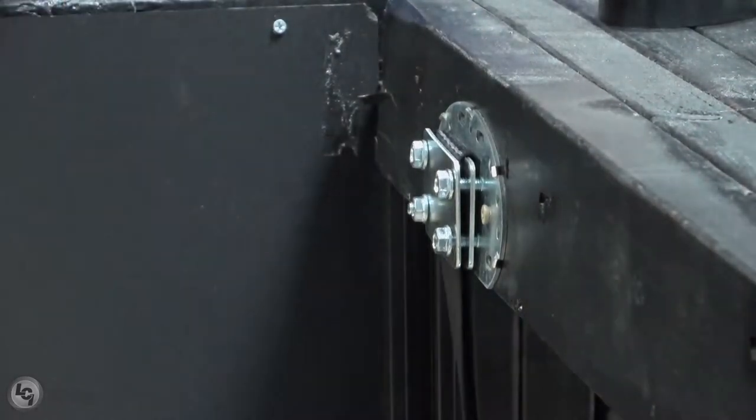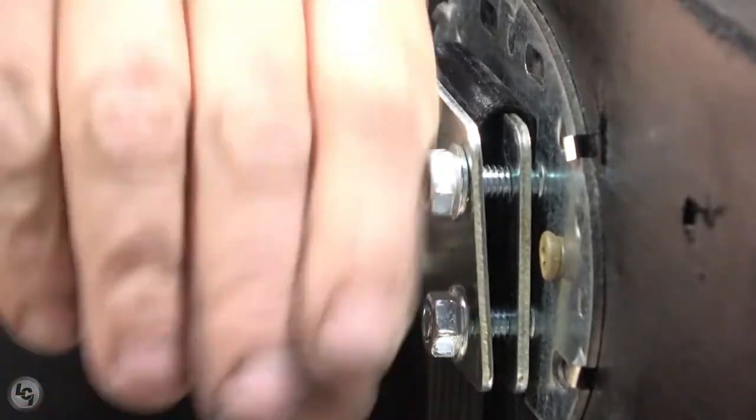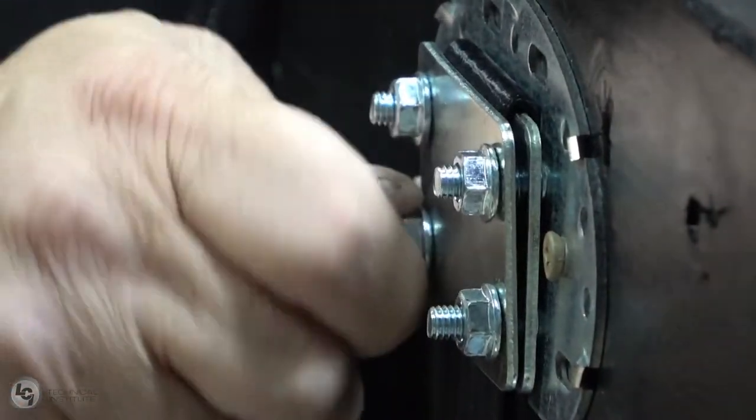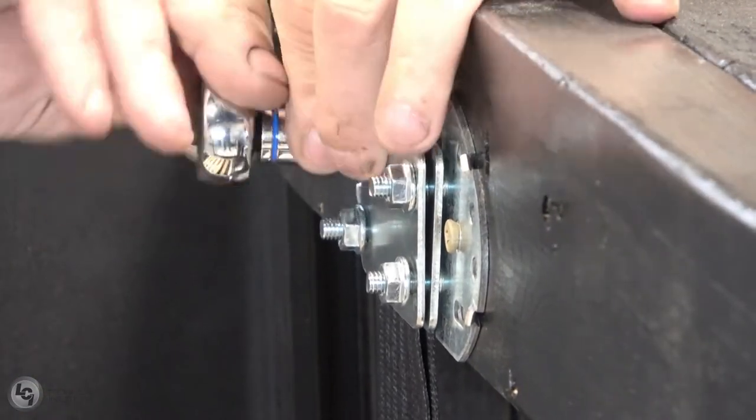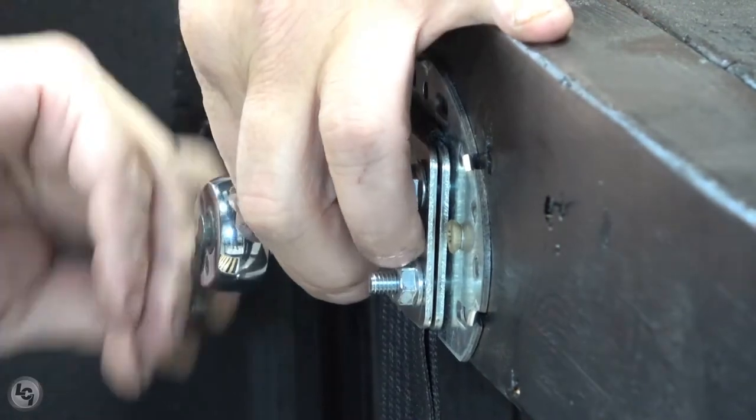Then begin tightening the four nuts down firmly. To finish securing the belt, grab a torque wrench and tighten each nut to 25 foot-pounds for proper belt retention.